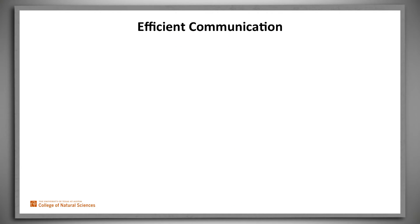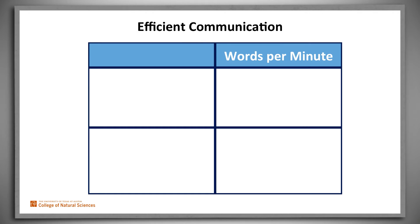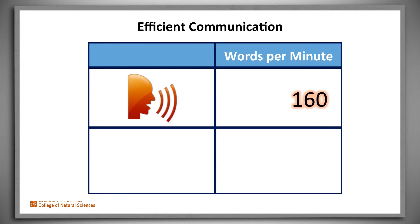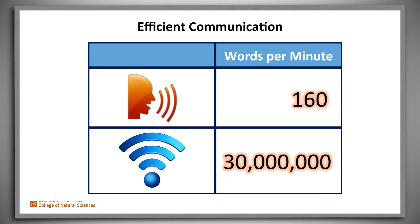English has evolved to be efficient. It has to be. A moderately fast-talking person can speak about 160 words a minute. Contrast this with a not-very-state-of-the-art wifi connection, which can transmit about 30 million words per minute.